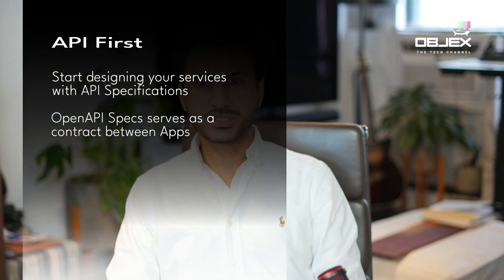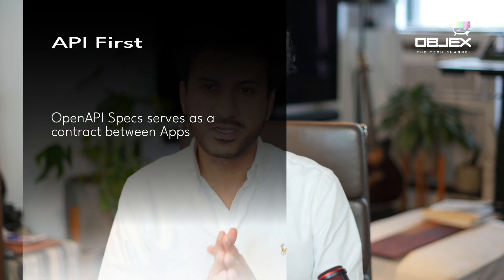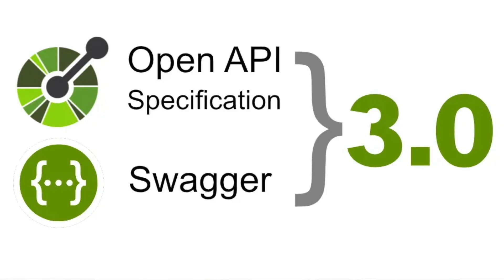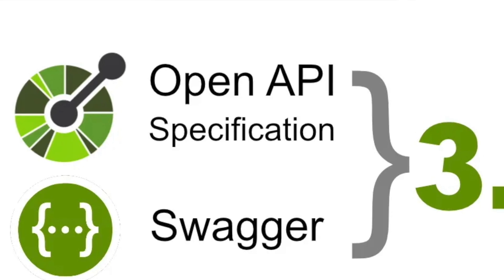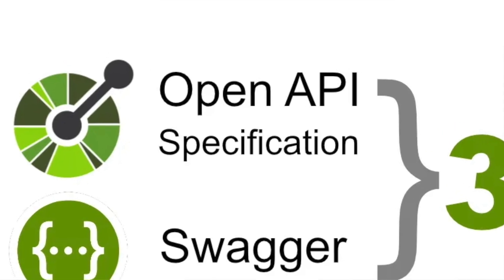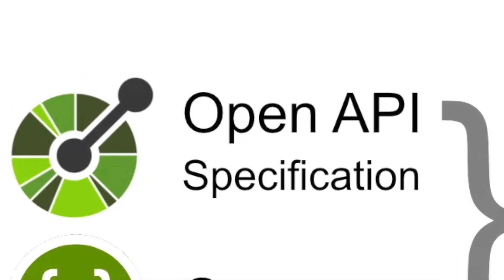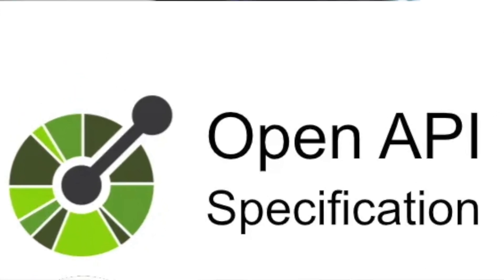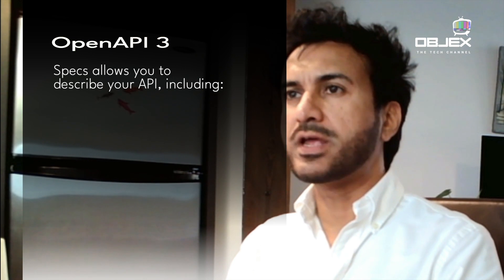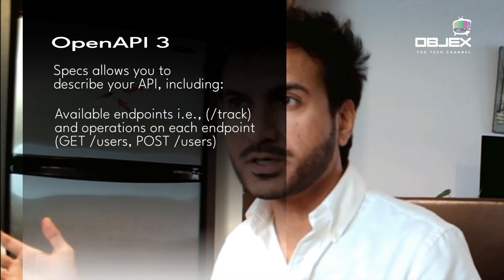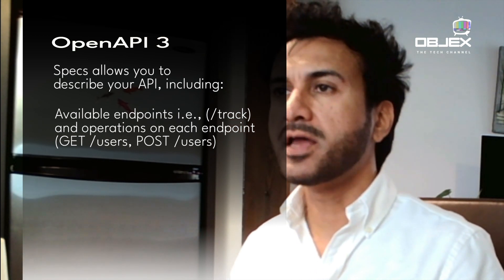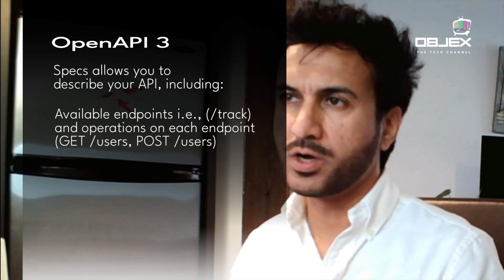Changing such a contract is always difficult, and this makes the design of an API extremely important. The industry standard for REST API definition is the Open API specifications, renamed from Swagger specifications to Open API specifications in 2015. Open API specs allow you to describe your API, including available endpoints exposed for external applications and operations on each endpoint.